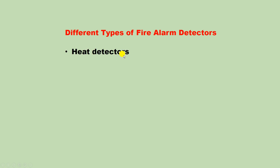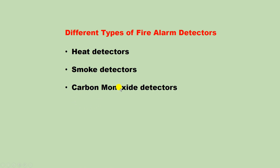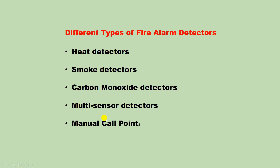The types of detectors are: first, heat detector; second, smoke detector; third, carbon monoxide detector; fourth, multi-sensor detector; and last, manual call point. The manual call point is not actually a detector — you have to operate it manually — but it is included here. So there are effectively five types of sensing devices.